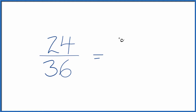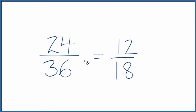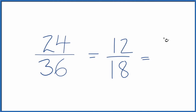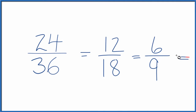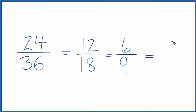24 divided by 2 is 12, and 36 divided by 2 is 18. Let's do it again: 12 divided by 2 is 6, and 18 divided by 2 is 9. All of these are equivalent fractions to 24/36. And 3 will go into 6 and 9 evenly — 6 divided by 3 is 2, and 9 divided by 3 is 3.